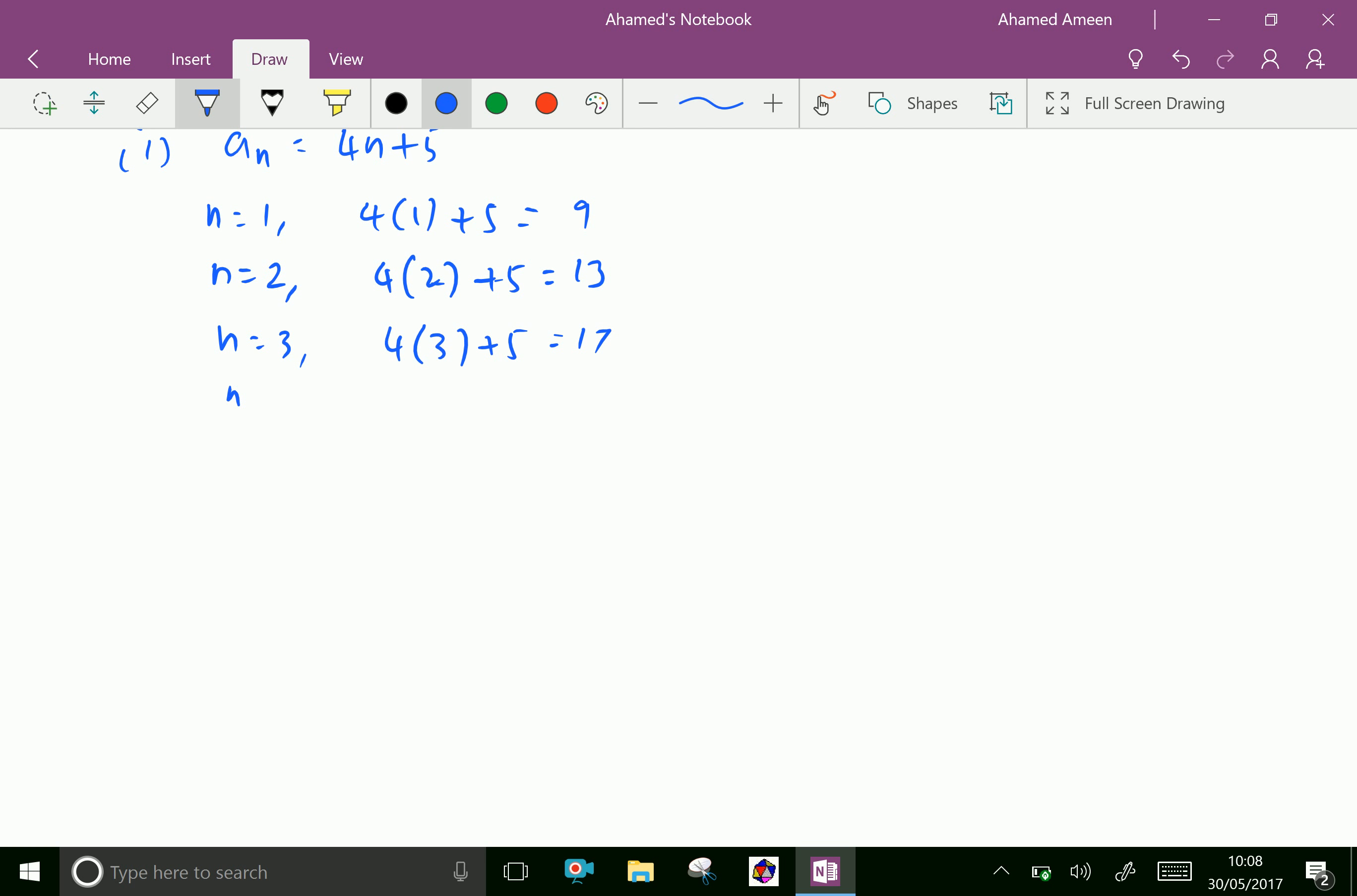Put n equal to 4. 4 into 4 is 16. 16 plus 5 is 21. Like this it increases. Therefore, if n equal to n, then 4n plus 5.